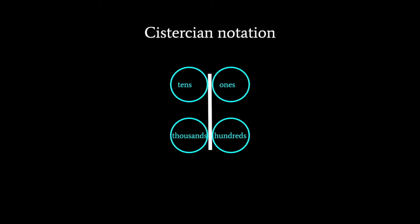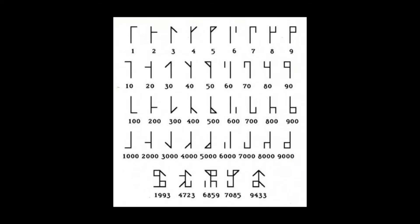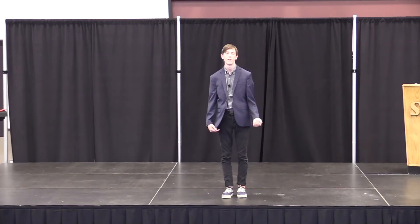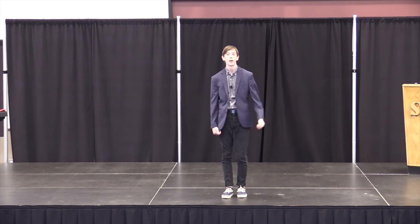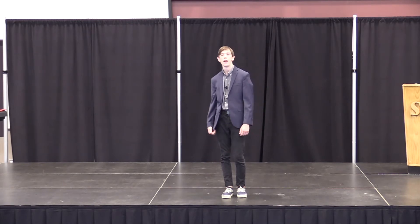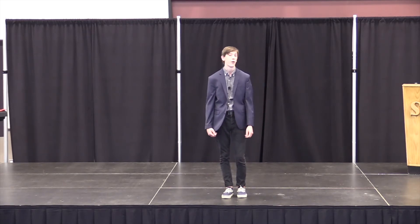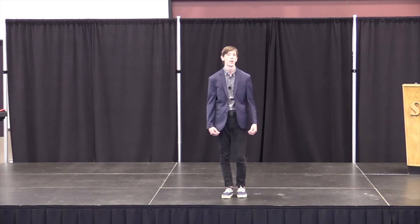Each number, one to nine, is developed by one or multiple line segments and placed in the corresponding place. This form is very easy to learn and is simplistic, allowing you to develop both large and small numbers in a very small space. It's easy for everyday life, but would be very hard to do operations in.